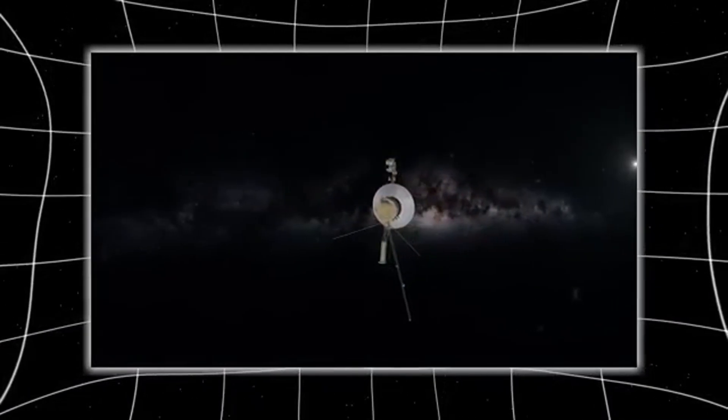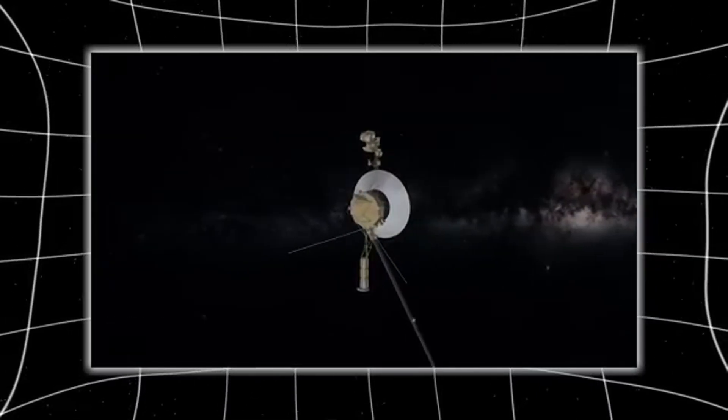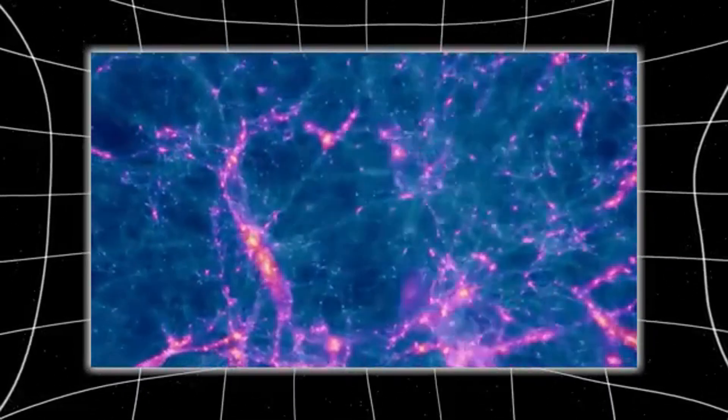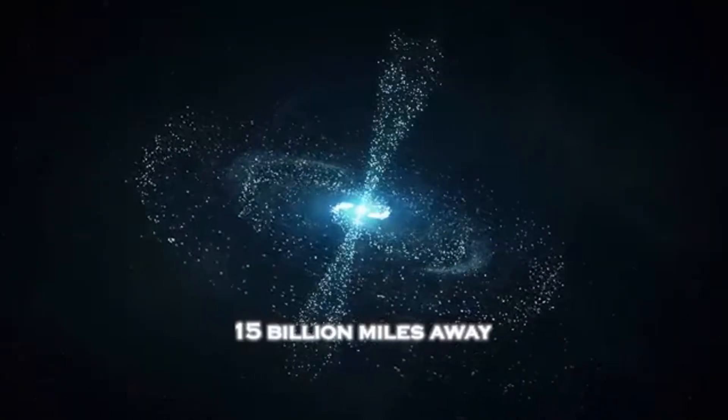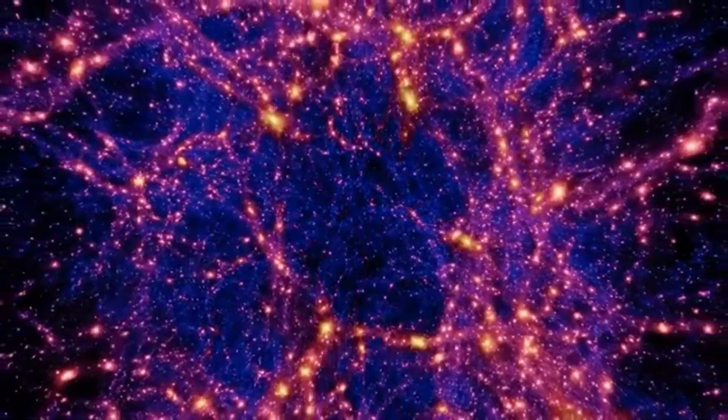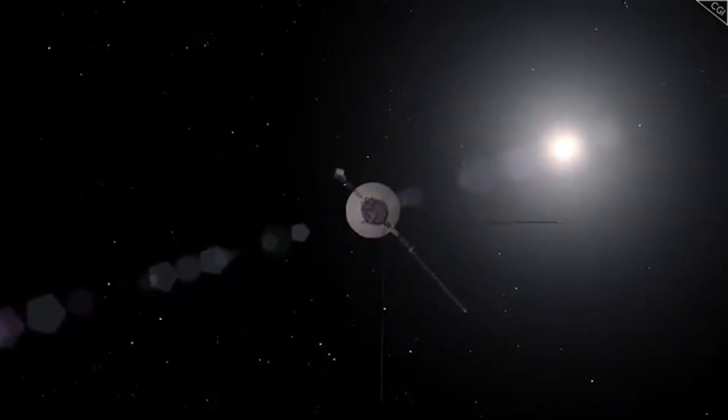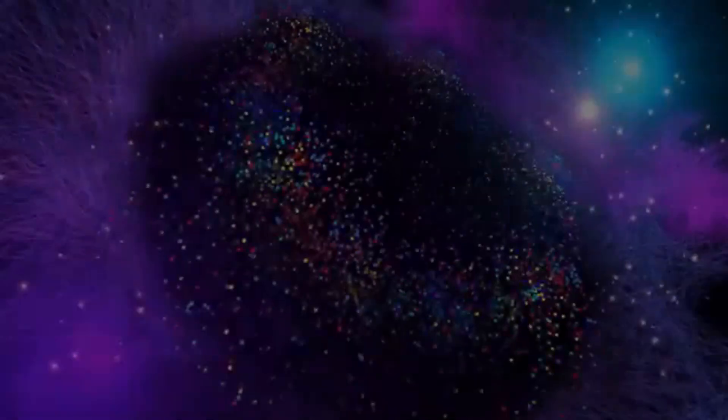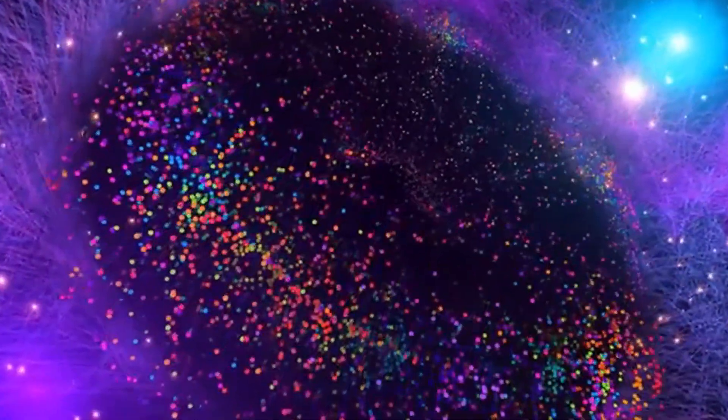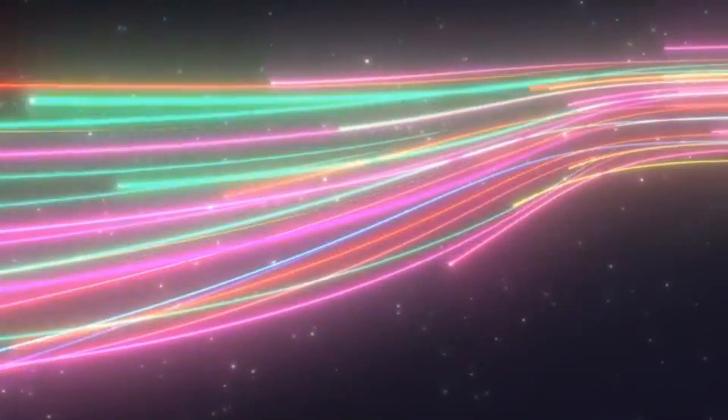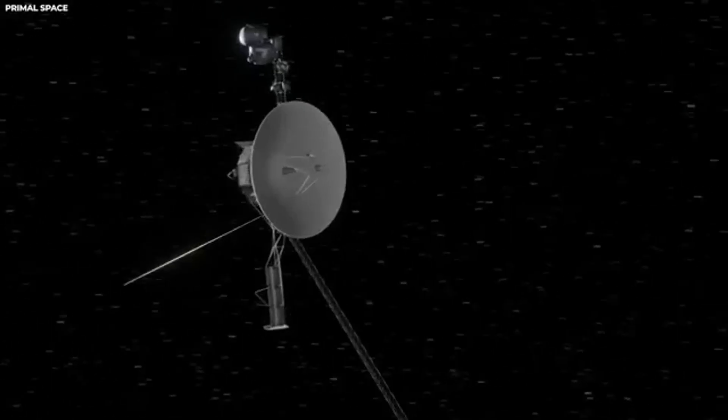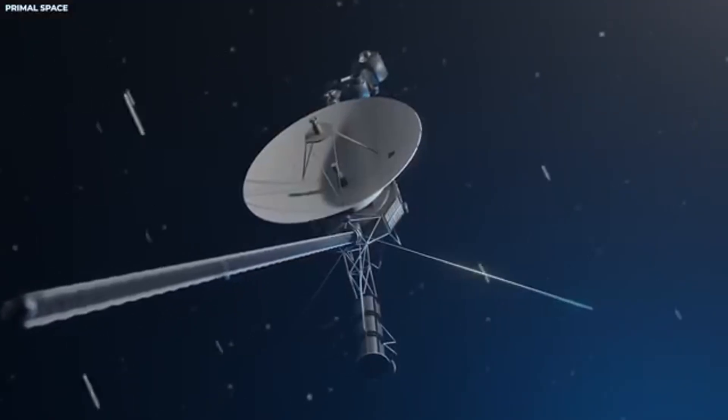What Voyager is sending now is more than just numbers. It's a blueprint, a living map of interstellar space. Scientists are using its data to chart the first-ever galactic GPS, not for navigation through planets, but through radiation zones, magnetic boundaries, and invisible cloudlets. Voyager has passed through at least two interstellar clouds, regions of denser gas and plasma that ripple like invisible fog banks. And in each one, it recorded different conditions, different temperatures, different magnetic alignments, like crossing continents with invisible borders.